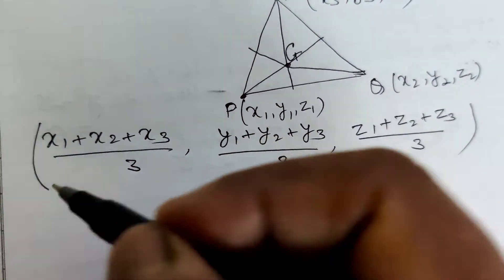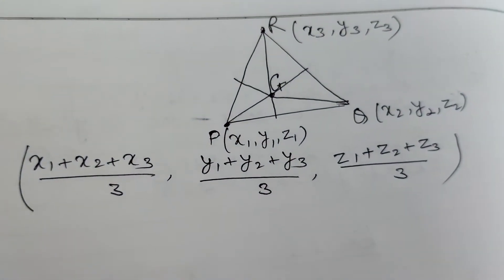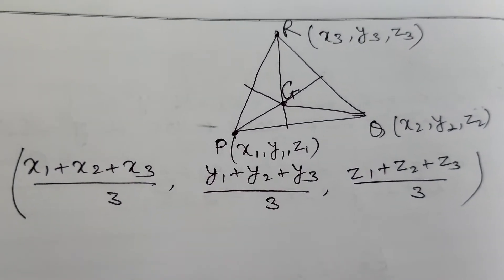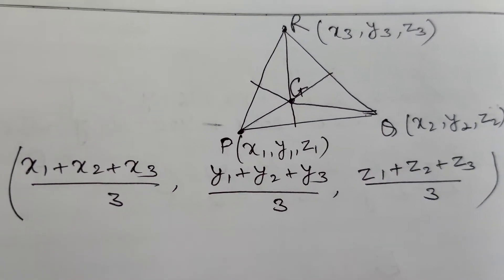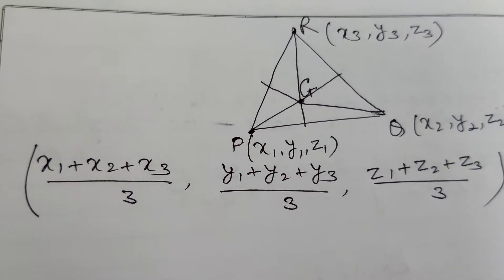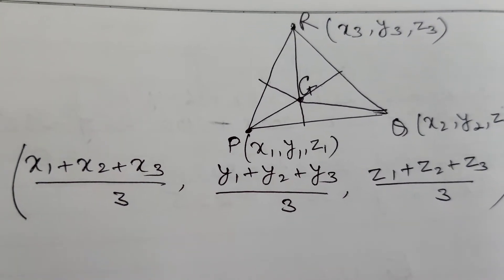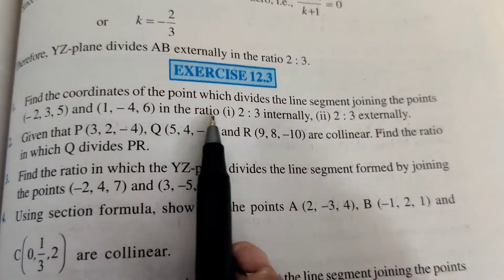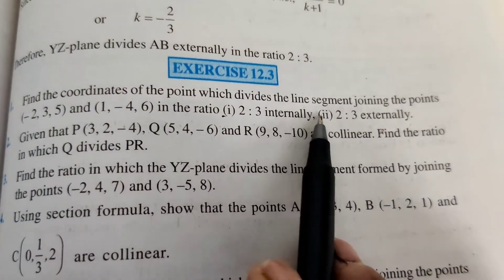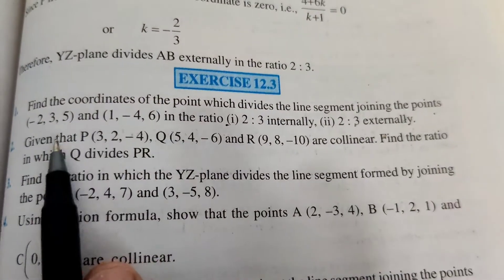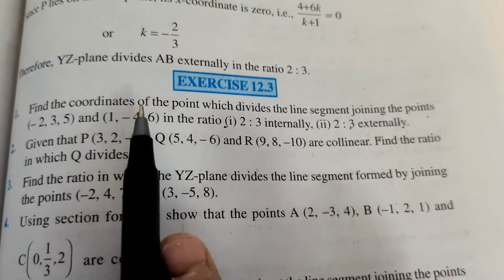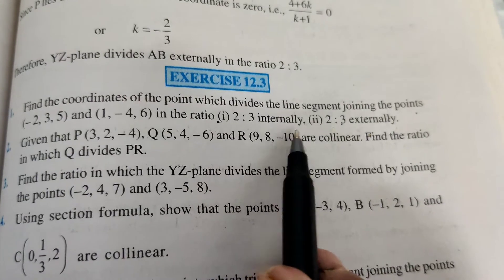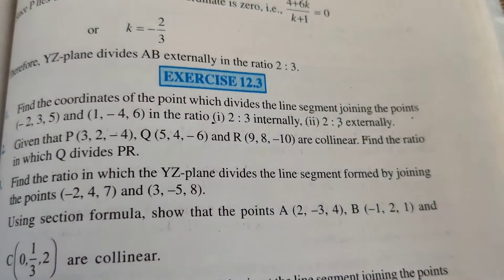Now exercise question number 1. In this exercise we will use the section formula — externally, internally — midpoint and coordinates of centroid. Question 1: Find the coordinates of the point which divides the line segment joining the points (−2, 3, 5) and (1, −4, 6) in the ratio 2 to 3 internally and 2 to 3 externally.